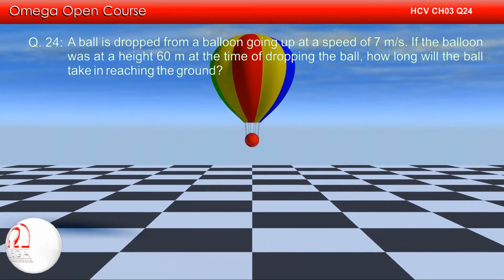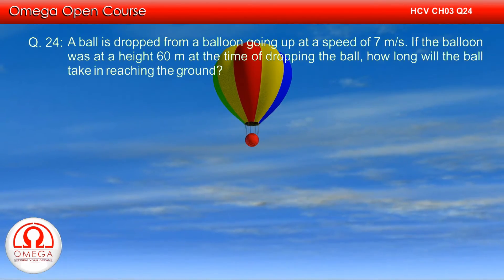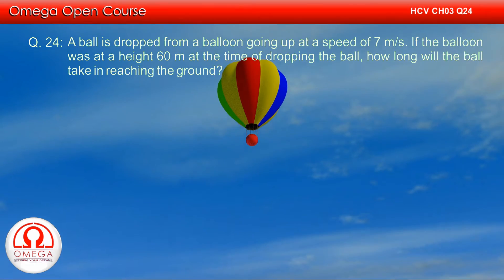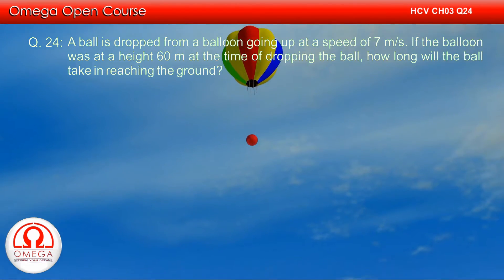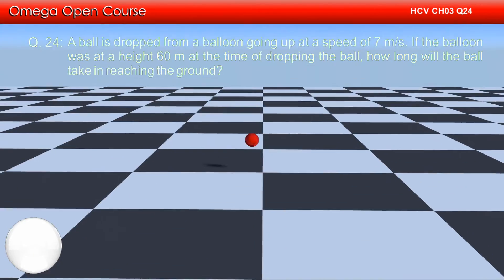A ball is dropped from a balloon going up at a speed of 7 meters per second. If the balloon was at a height of 60 meters at the time of dropping the ball, how long will the ball take in reaching the ground?